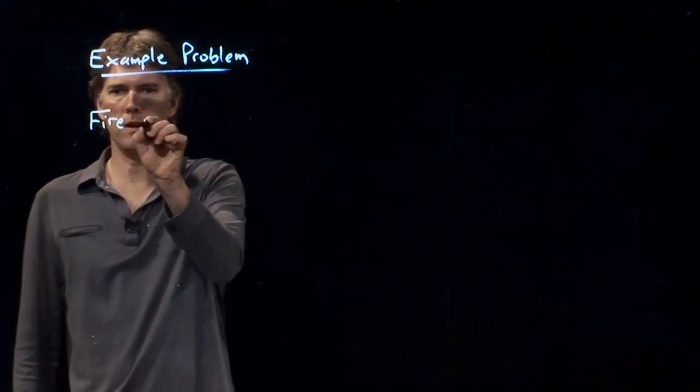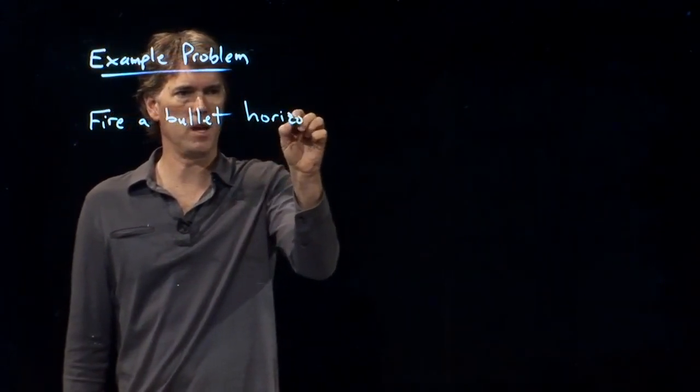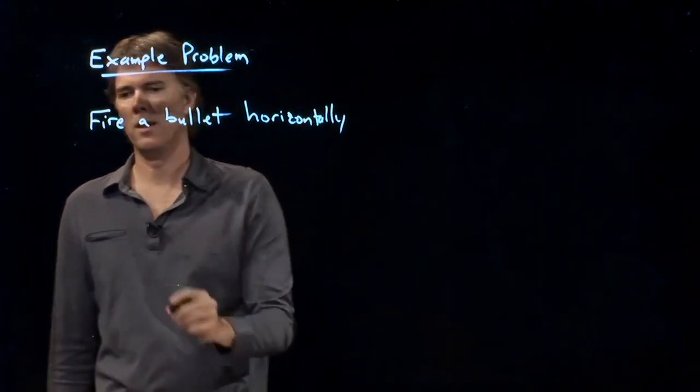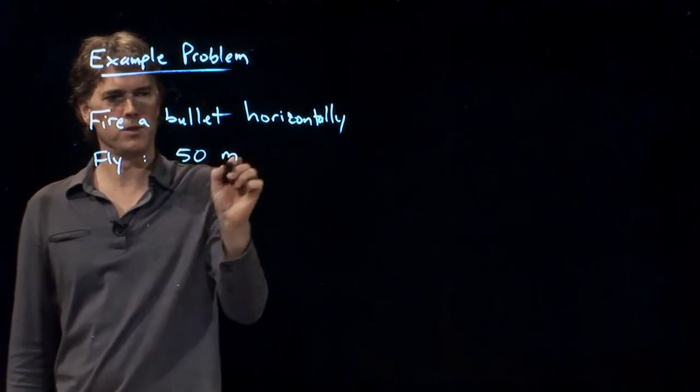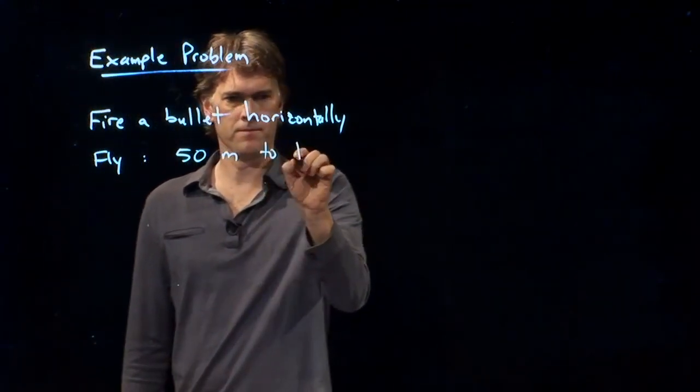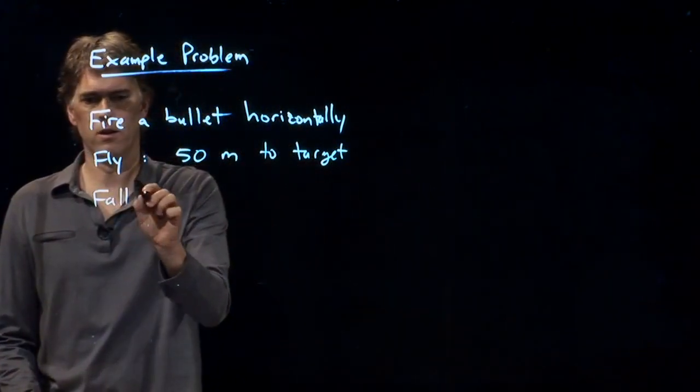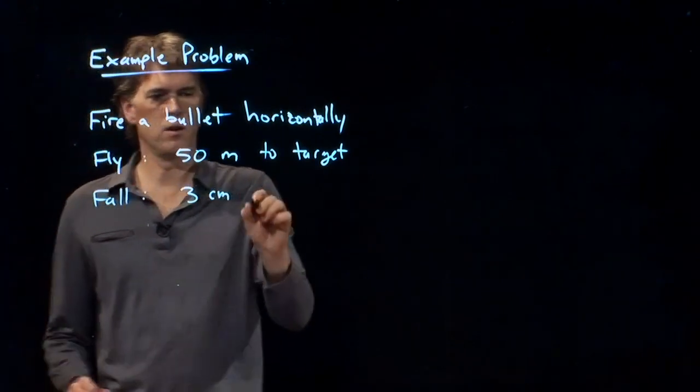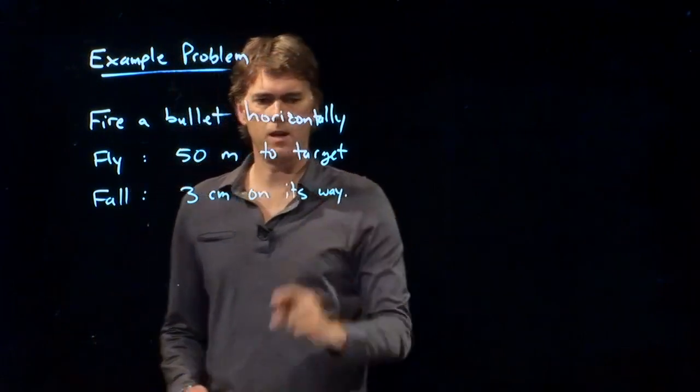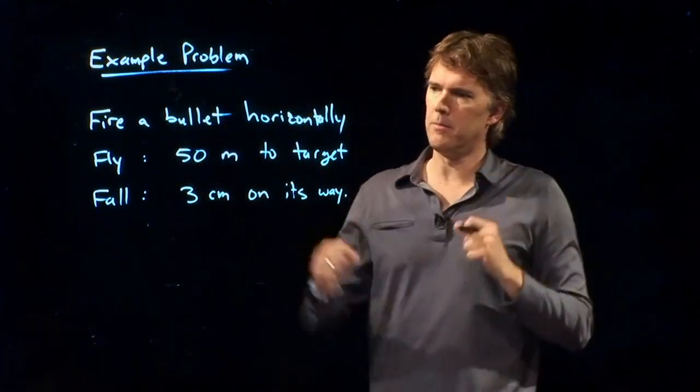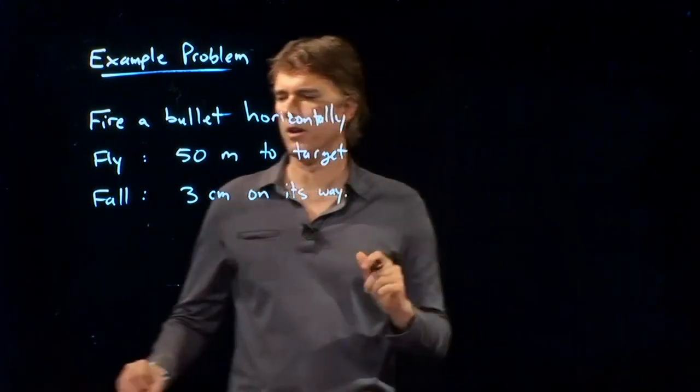You're gonna fire a bullet horizontally, perfectly horizontally when you launch it, and it's going to fly 50 meters to a target and it will fall three centimeters on its way. So you are firing your rifle 50 meters to the target and the bullet's going to fall three centimeters on its way.